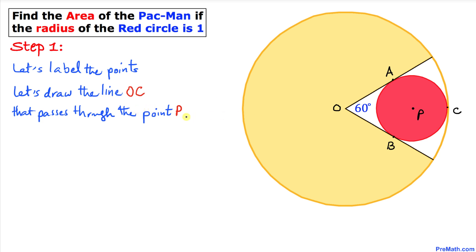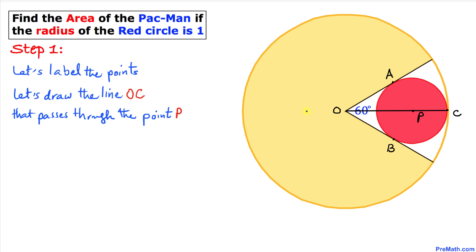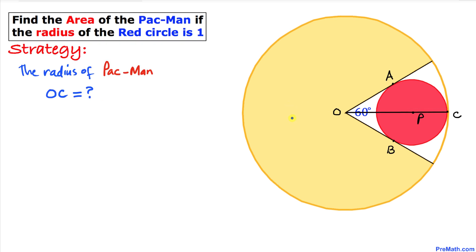Now let's draw the line OC that passes through center P. Here's our much nicer looking diagram. The strategy is: we know that the radius of this big circle, the pac-man, is OC. If we can somehow find the value of this radius, we can easily find the area of this pac-man.